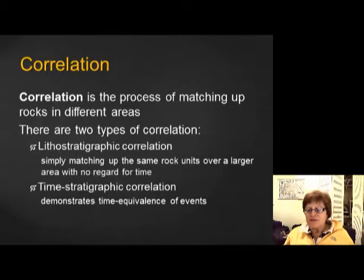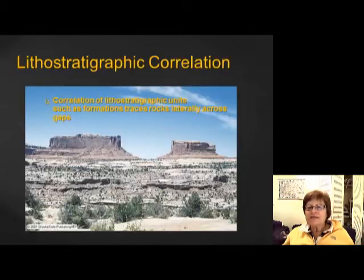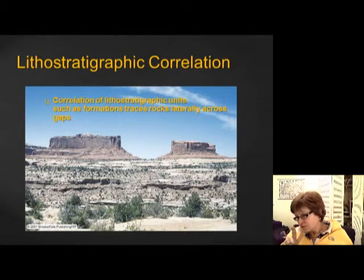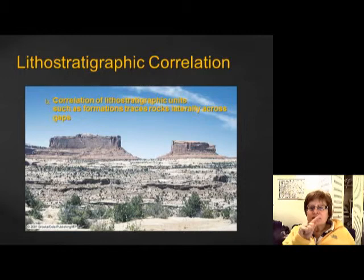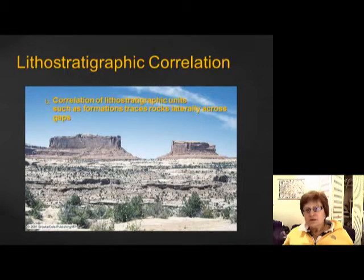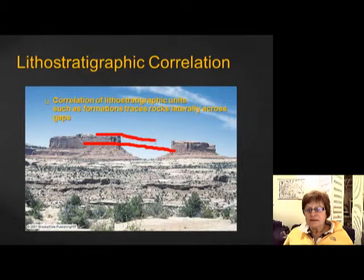In lithostratigraphic correlation, for example, if you see a river channel in the rocks, it's pretty easy to correlate from one location to another based strictly on the rock characteristics.